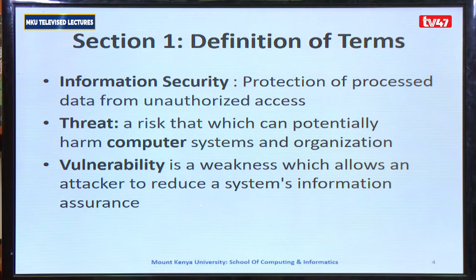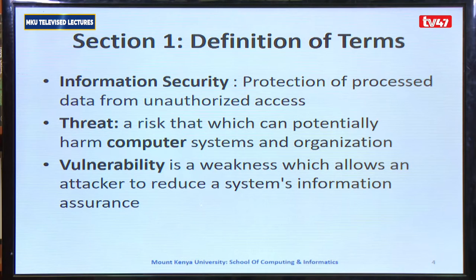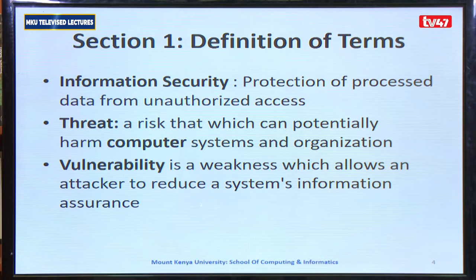We'll start with section one, which is definition of terms. Information security is the protection of processed data from unauthorized access. A threat is a risk which can potentially harm a computer system and organization, e.g. a virus. A vulnerability is a weakness which allows an attacker to reduce a system's information assurance.